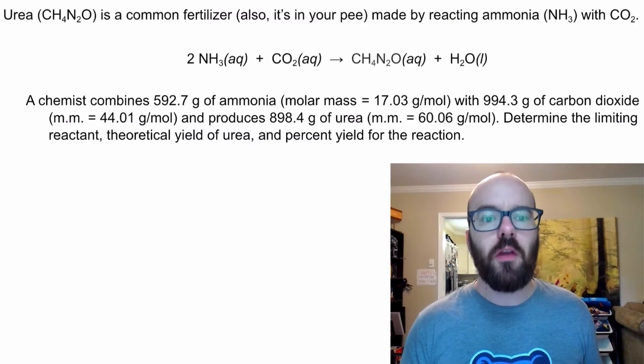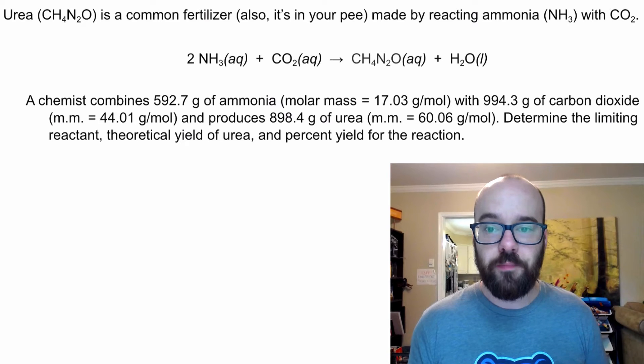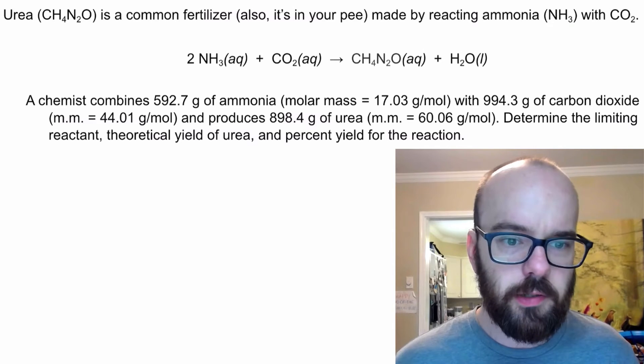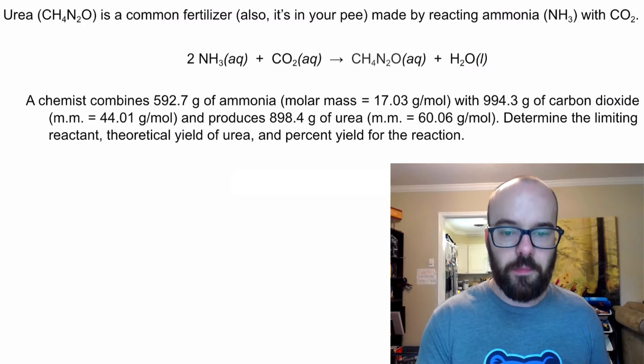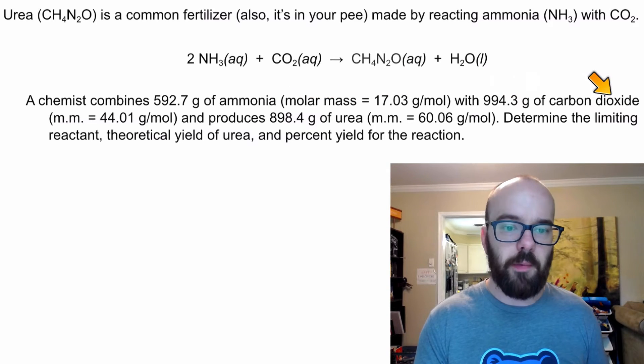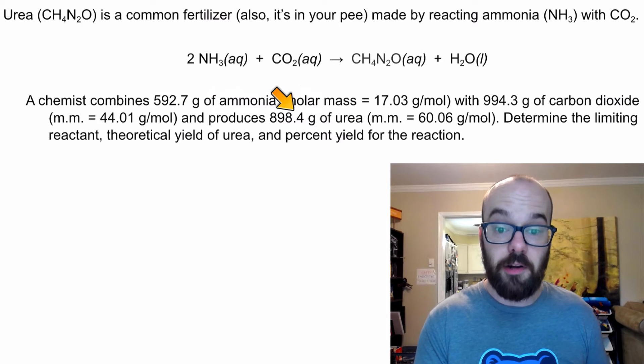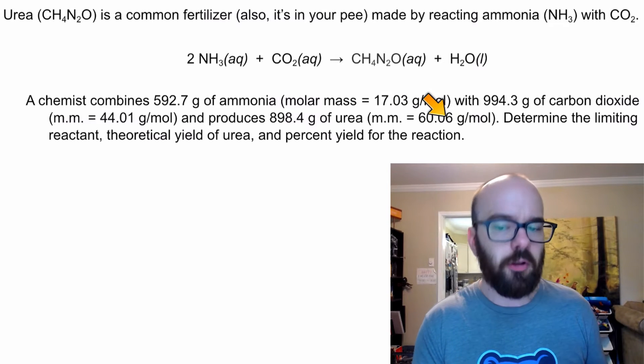Here's our first problem. Urea (CH₄N₂O) is a common fertilizer. Also, it's in your pee made by reacting ammonia (NH₃) with carbon dioxide (CO₂). A chemist combines 592.7 grams of ammonia (molar mass = 17.03 g/mol) with 994.3 grams of carbon dioxide (molar mass = 44.01 g/mol) and produces 898.4 grams of urea (molar mass = 60.06 g/mol).